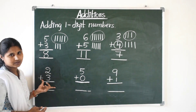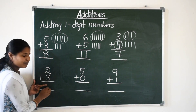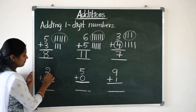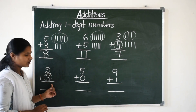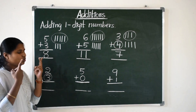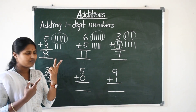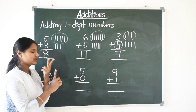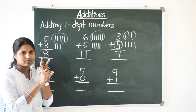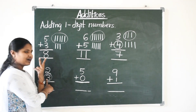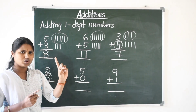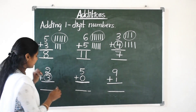Next, two plus three. Here what is the big number? Three is the big number. So keep three in mind and open two fingers. Three after two more numbers: four, five.